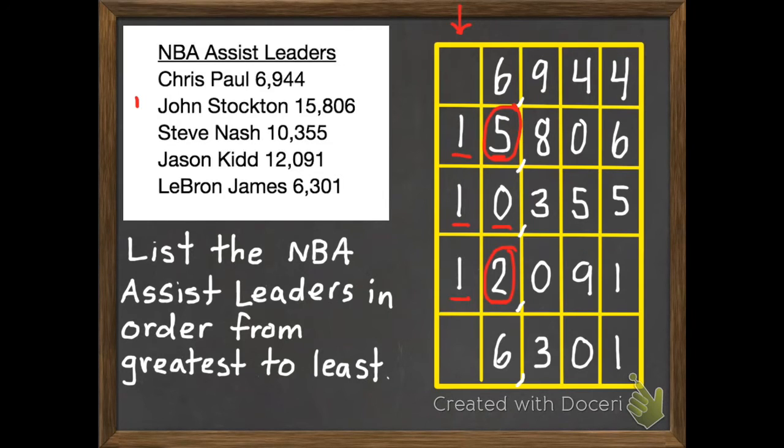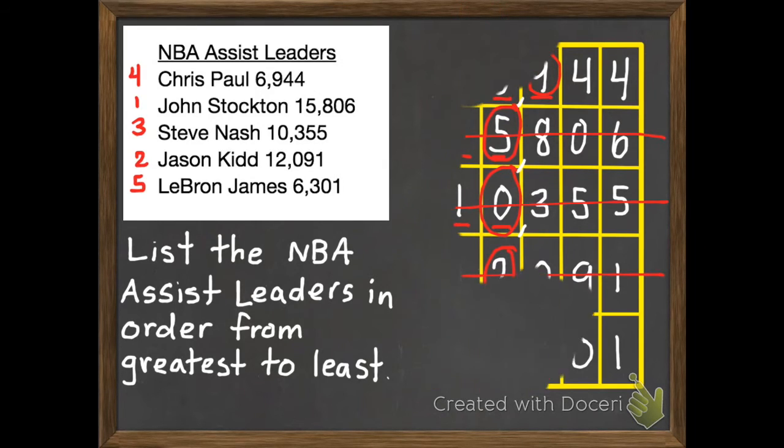Second would be the 2, which is Jason Kidd. And 0 would be third, which is Steve Nash. Now that we've made it through these three, we need to figure out who's 4th and 5th. So neither of those other two have made it to 10,000. So we're going to look at the 1,000s place. They both have a 6, so we need to look at the 100s, where Chris Paul has a 9 and LeBron has a 3. 9 is greater, which makes Chris Paul 4th and LeBron James 5th.